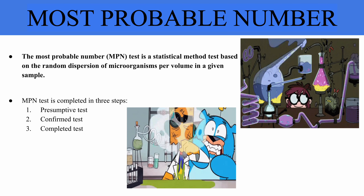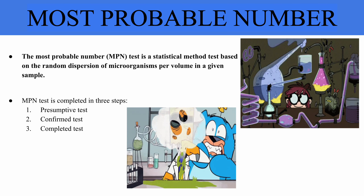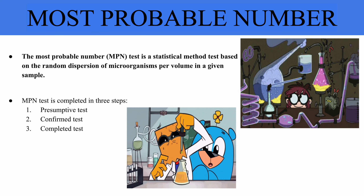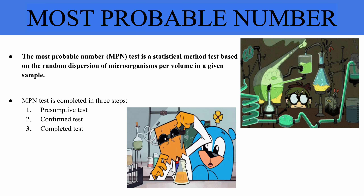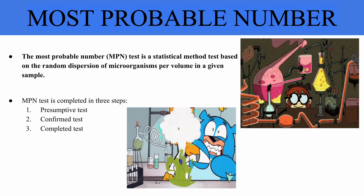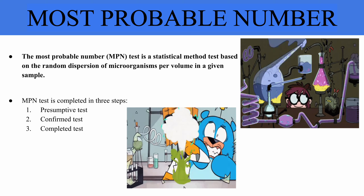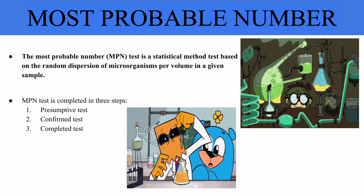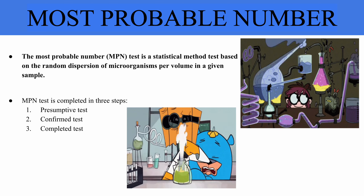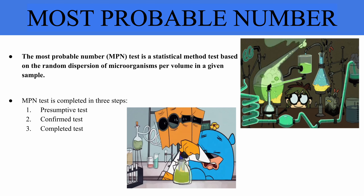In the completed test, positive results are further verified. A coliform colony from the Endo agar plate is inoculated into Brilliant Green Bile Broth and nutrient agar. After incubation, gas production and Gram staining confirm the presence of gram-negative, non-spore-forming rods, indicating coliforms in the water sample.